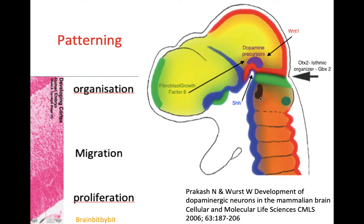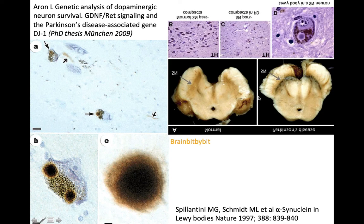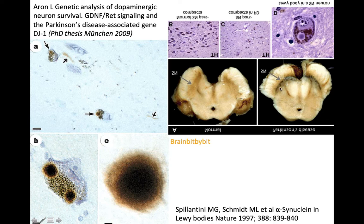For those interested, more caudally are the serotonin precursors. From this dopaminergic region, both the substantia nigra and the ventral tegmental area arise. In Parkinson's disease, there is loss of the dopaminergic neurons, which are also slightly pigmented. This is a normal midbrain, and this is a midbrain with Parkinson's disease, showing some iron deposition. In the diseased cells, there is also accumulation of a protein called alpha-synuclein, which leads to the formation of Lewy bodies, first described in Nature in 1997. Lewy bodies are the hallmark of Parkinson's disease.